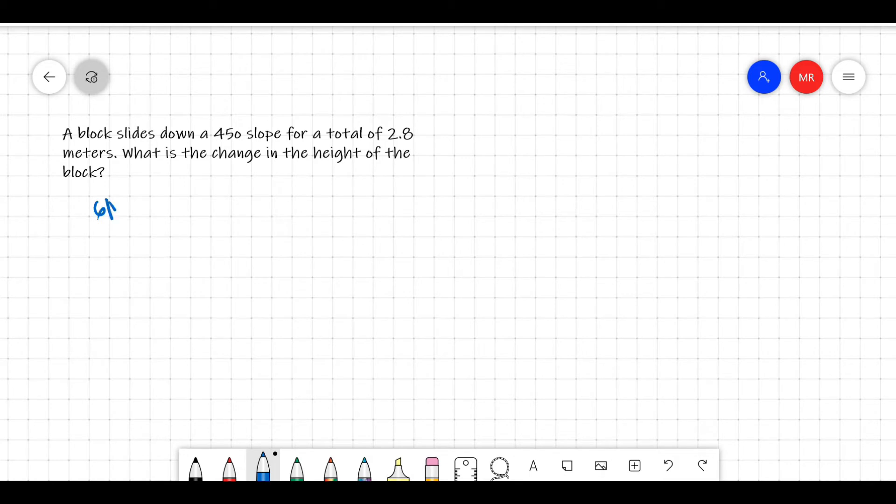Let us again have a figure so we can have a better analysis of this problem. So let's say that this is the slide, it is a 45 degree slope, and a block slides down at a distance of 2.8 meters.